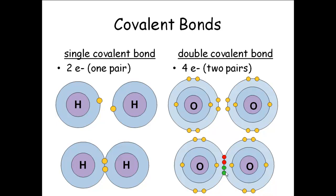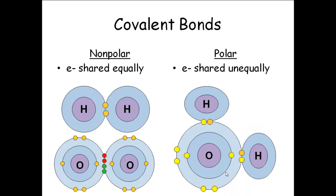You can even have a triple covalent bond. Nitrogen makes up most of the air we breathe, and nitrogen forms a triple covalent bond with itself — six electrons, three pairs. Each line represents a pair of electrons. If two identical atoms share electrons, they share equally — those electrons spend the same amount of time around each nucleus. We call these nonpolar covalent bonds: no unequal charges, electrons shared equally.